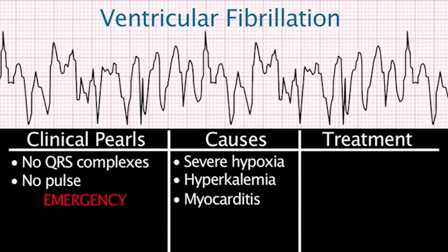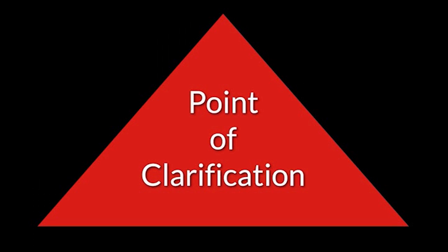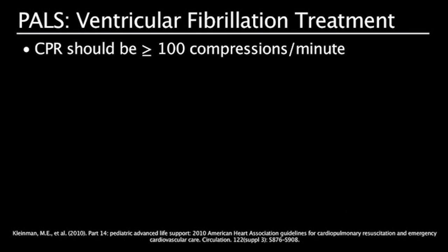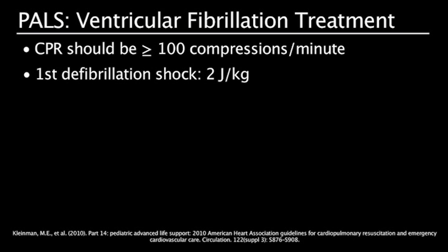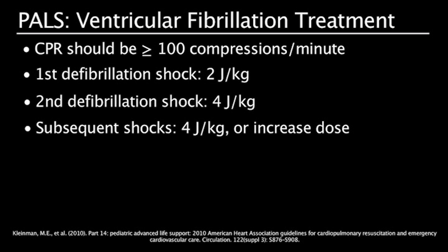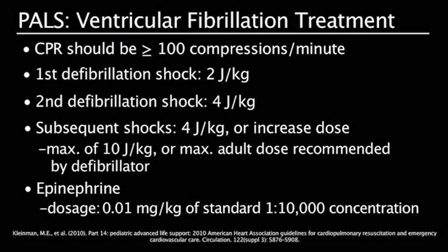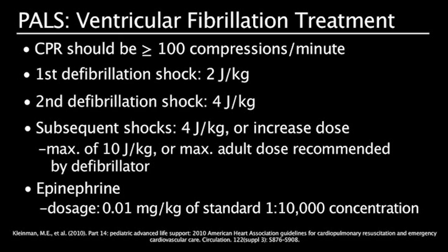Management is cardiopulmonary resuscitation, defibrillation, and epinephrine. Point of clarification: CPR should be at least 100 compressions per minute. In PALS, the first defibrillation shock is given at 2 joules per kg, and the second defibrillation shock is given at 4 joules per kg. Subsequent shocks may be given at 4 joules per kg, or some providers may increase the dose to a maximum of 10 joules per kg or the maximum adult dose recommended by a particular defibrillator. The proper dosage of epinephrine is 0.01 mg per kg of the standard 1 to 10,000 concentration.